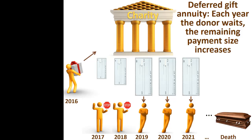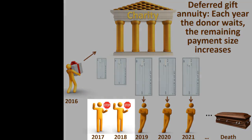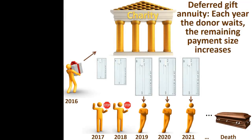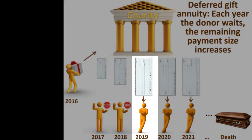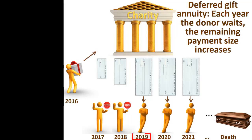One particularly attractive variation of the standard gift annuity is the deferred gift annuity. If the donor does not need the income payments to begin immediately, the donor may choose to postpone the start of the annuity payments. Each year that the donor postpones the start of the annuity payments will increase the size of the remaining payments. This may be helpful for donors who wish to make an immediate transfer, receive an immediate tax deduction, but postpone income until some future year, such as the start of retirement. The donor can either establish in advance when the annuity will begin, or can decide each year whether or not to begin the annuity in that particular year. This is sometimes called a flexible annuity.